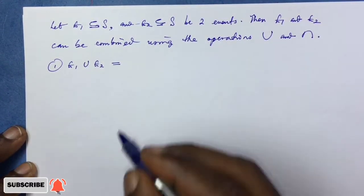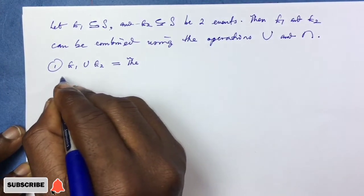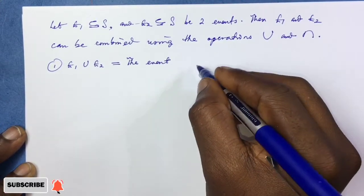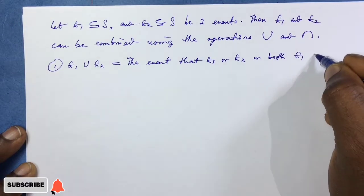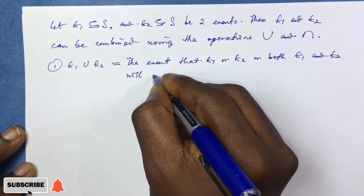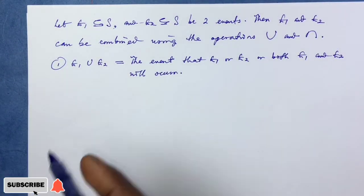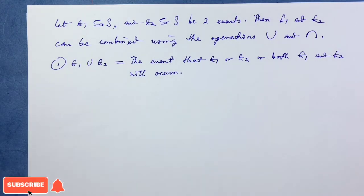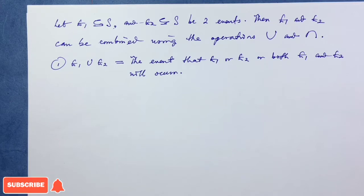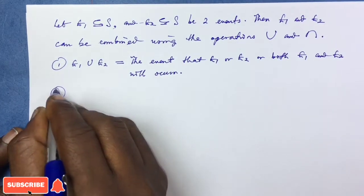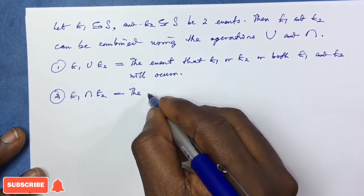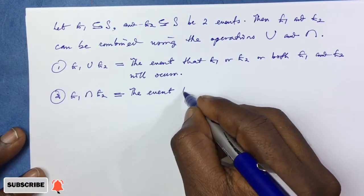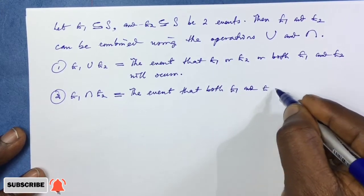E1 union E2 would be a new event meaning it is the event that E1 or E2 or both E1 and E2 will occur. When you combine two events E1 and E2 using the union operation, it means you are talking about the event that either E1 or E2 or both of them occurring. E1 intersection E2 is the new event that both E1 and E2 will occur.